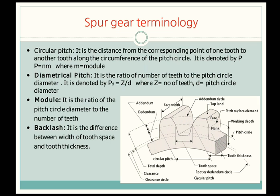Next is backlash. It is the difference between the width of the tooth space and the tooth thickness. The tooth space is the gap between two adjacent teeth, as shown in the figure, and backlash is the difference between that tooth space width and the tooth thickness.